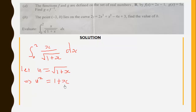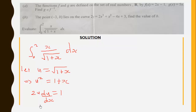Differentiating u² = 1 + x implicitly with respect to x gives 2u du/dx = 1, so 2u du = dx. Before substituting into the integral, we need to change the limits of integration.